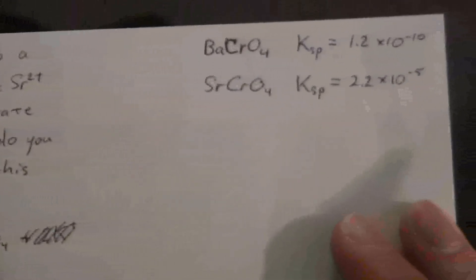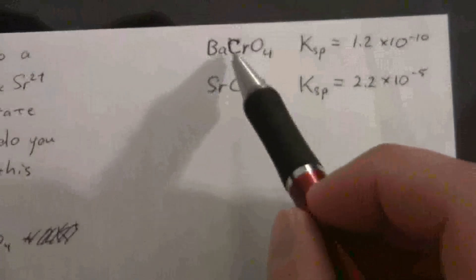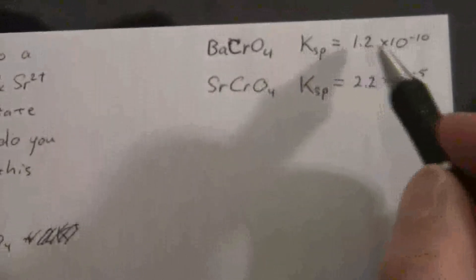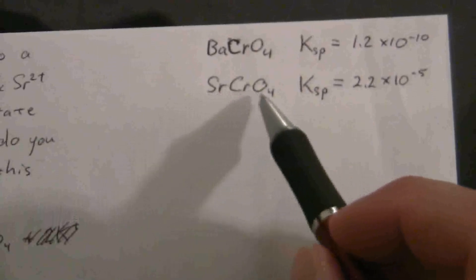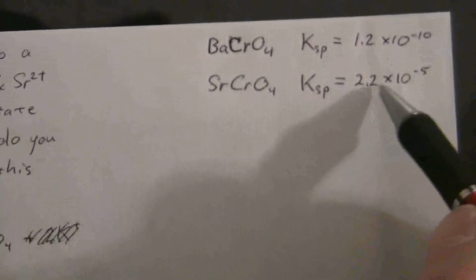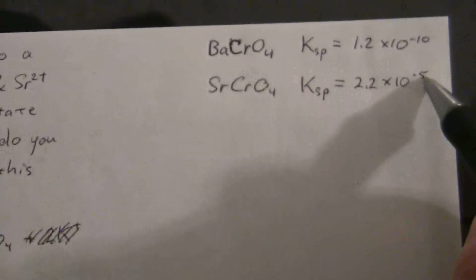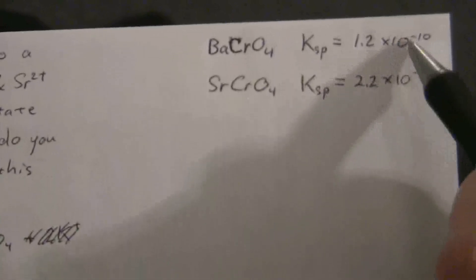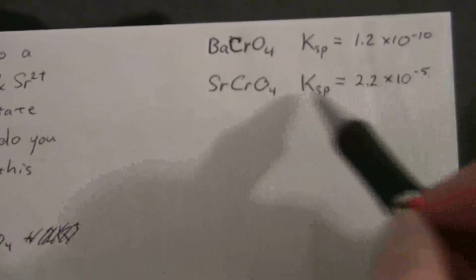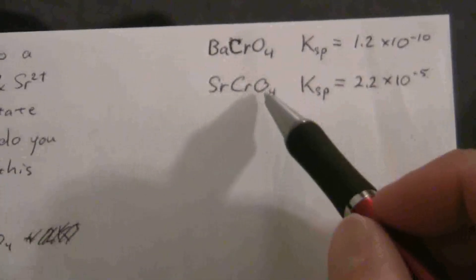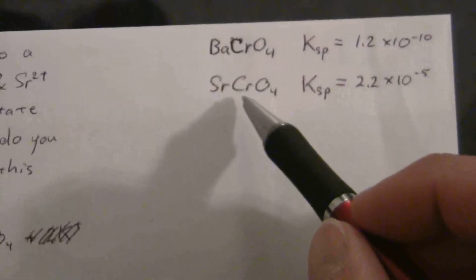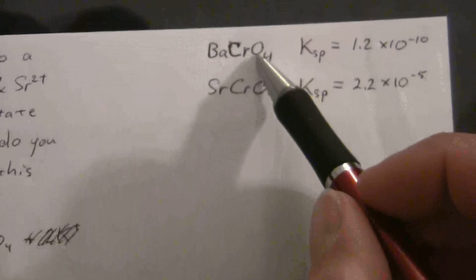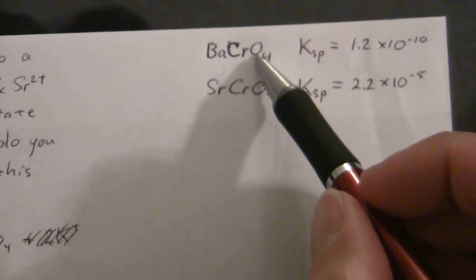And what we find is that the Ksp for barium chromate is 1.2 times 10 to the minus 10, while the Ksp for strontium chromate is 2.2 times 10 to the minus 5. So quite a lot larger for strontium chromate, which means more of it is going to be dissolved, so our barium chromate is going to precipitate first.